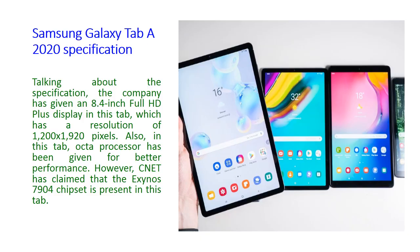Now the Samsung Galaxy Tab A full specification. The company has given an 8.4 inch full HD plus display with a resolution of 1200 x 1920 pixels. An Octa-core processor has been given for better performance, and according to CNET, the Exynos 7904 chipset is present in this tab.